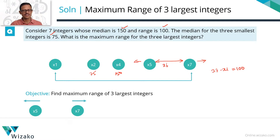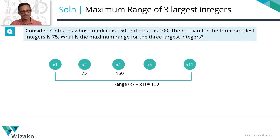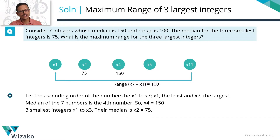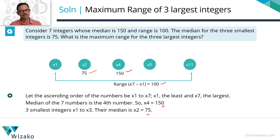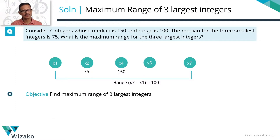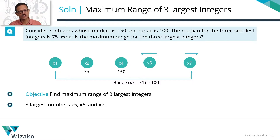Let's consolidate what we have. x4 equals 150; x7 minus x1 equals 100; x2 equals 75. The three largest numbers are x5, x6, x7. To maximize the range x7 minus x5, we need to maximize x7 — pushing it as far right as possible — and minimize x5 — pushing it as far left as possible.